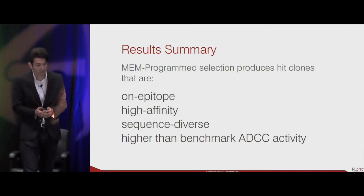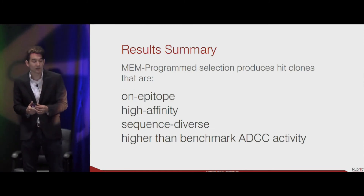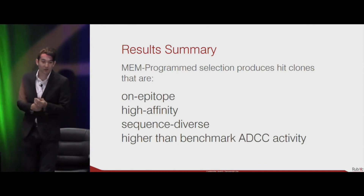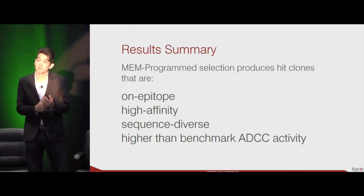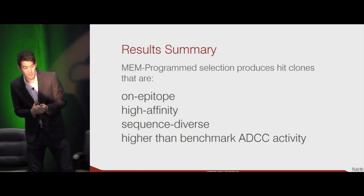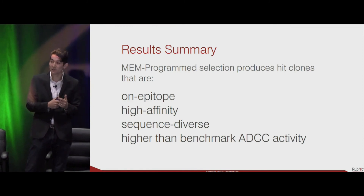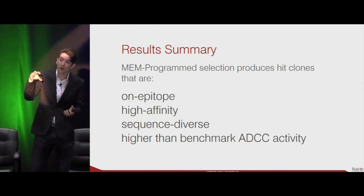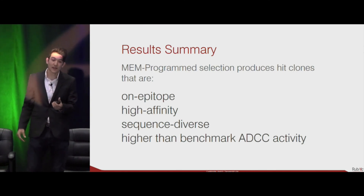In summary, our MEM-programmed selection produces hit clones that are on-epitope. Compared to conventional strategies, they deliver high-affinity, sequence-diverse clones, and in many cases can deliver higher-than-benchmark ADCC activity without optimization — because we have exquisite control over where our antibodies are binding to the antigen target.